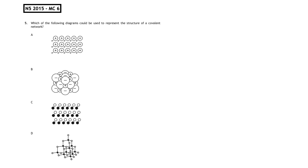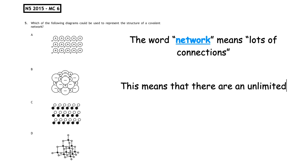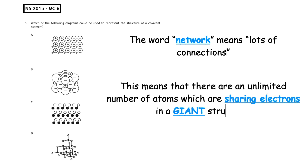This question is from the National 5 2015 multiple choice, question 6: Which of the following diagrams could be used to represent the structure of a covalent network? Remember, the word network means lots of connections. This means there are an unlimited number of atoms which are sharing electrons in a giant structure. The diagram which represents this is multiple choice answer D.